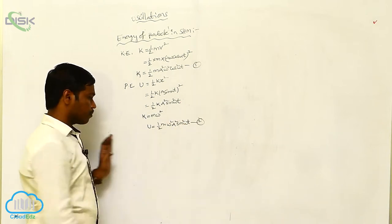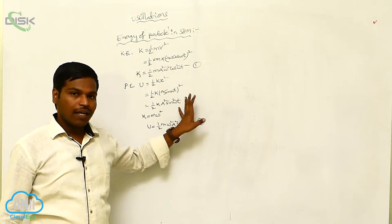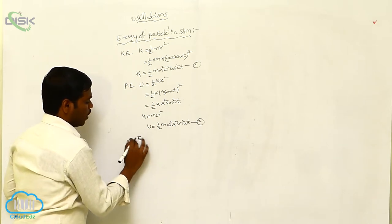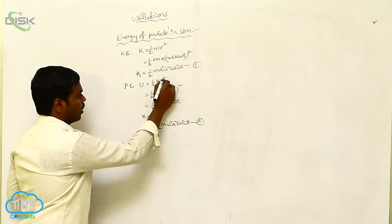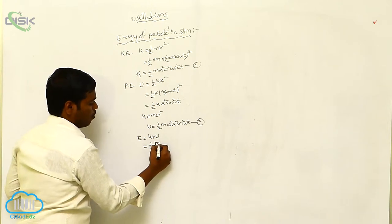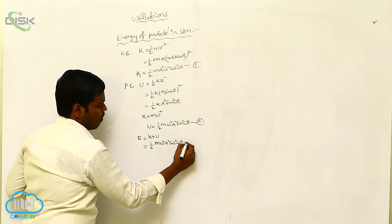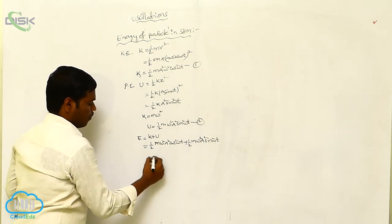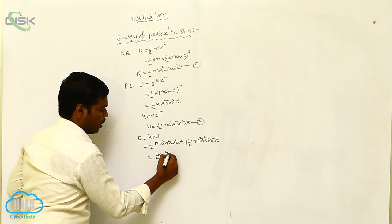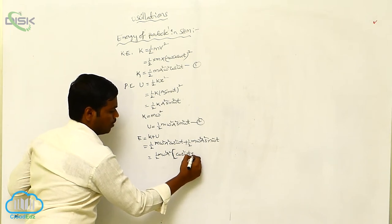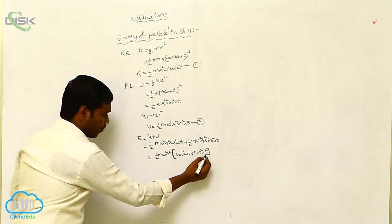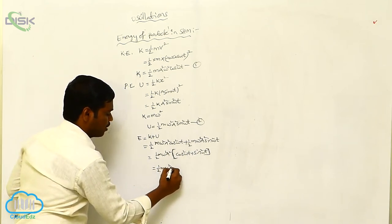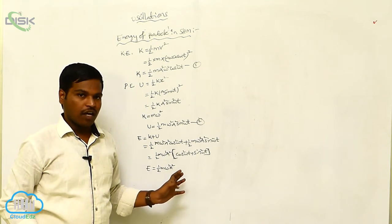Now we have to calculate the total energy of the particle. The total energy E equals kinetic energy plus potential energy, that is half mω²A² cos²(ωt) plus half mω²A² sin²(ωt). Taking common factor half mω²A², we get cos²(ωt) plus sin²(ωt). Since cos² θ plus sin² θ equals 1, the total energy E equals half mω²A².